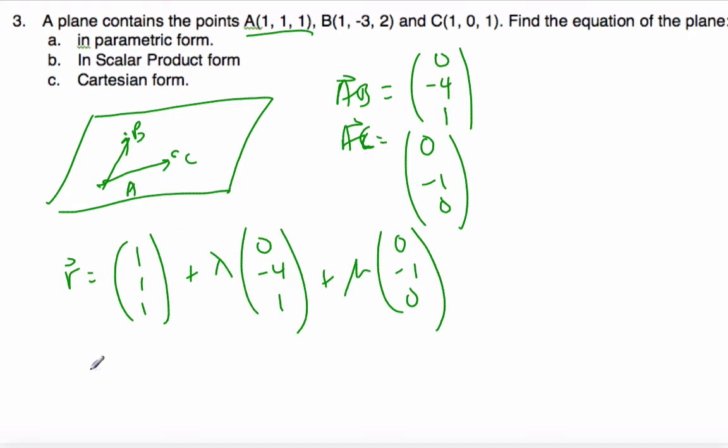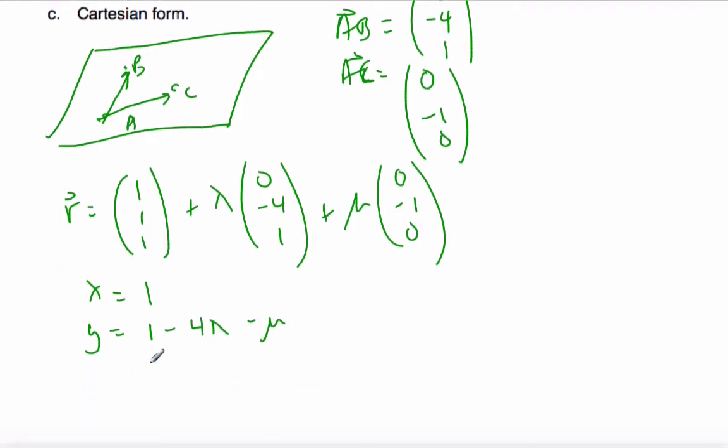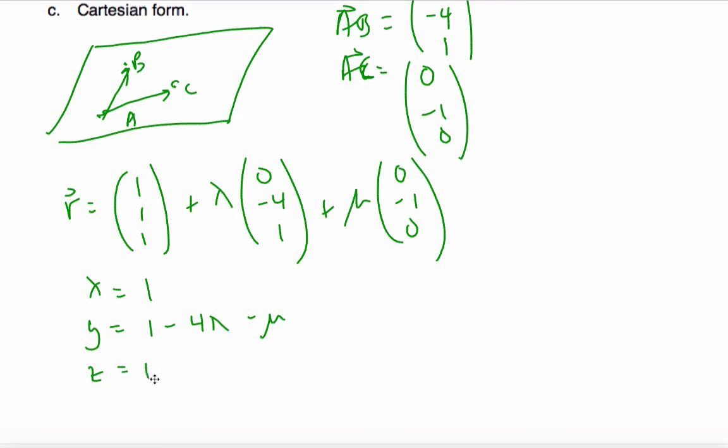Converting that to parametric is simply just going X is equal to 1. Y will be 1, minus lambda, minus mu, and Z, finally, 1 plus lambda. And this will be the parametric form of the plane.